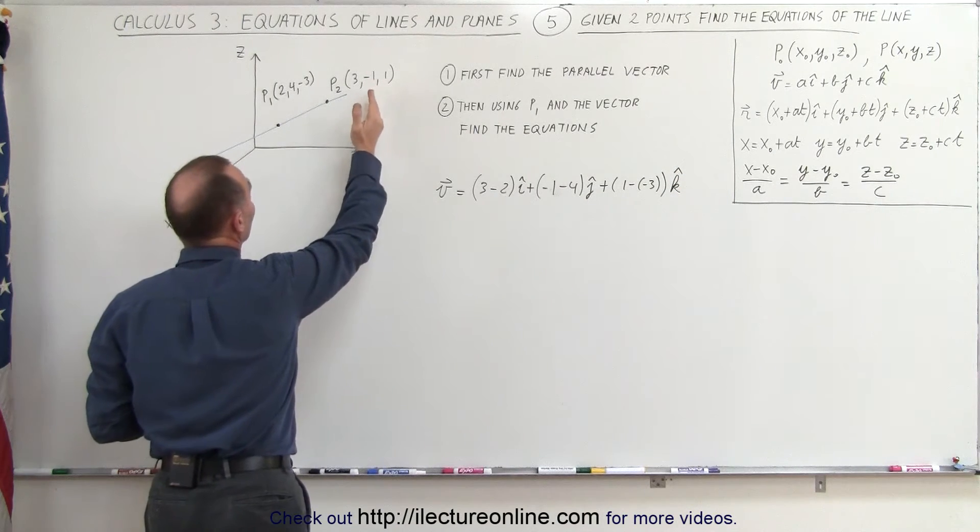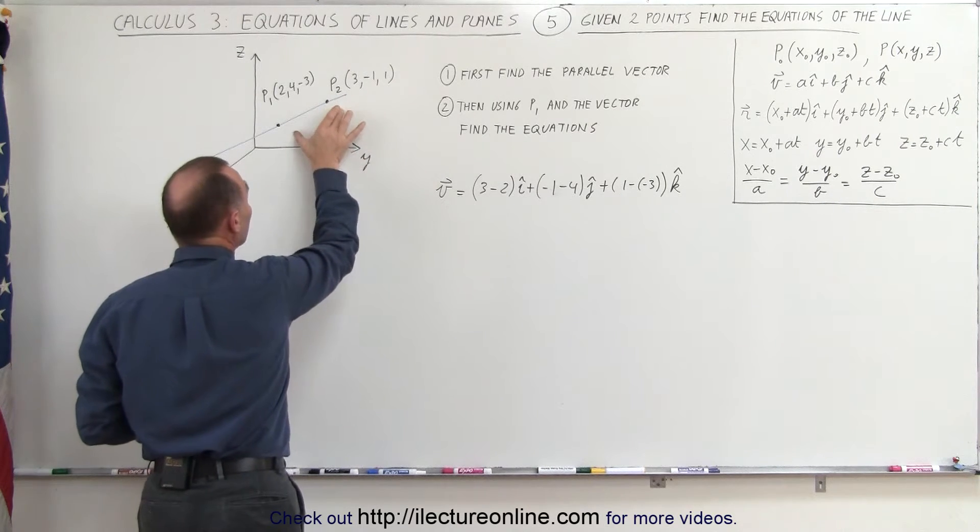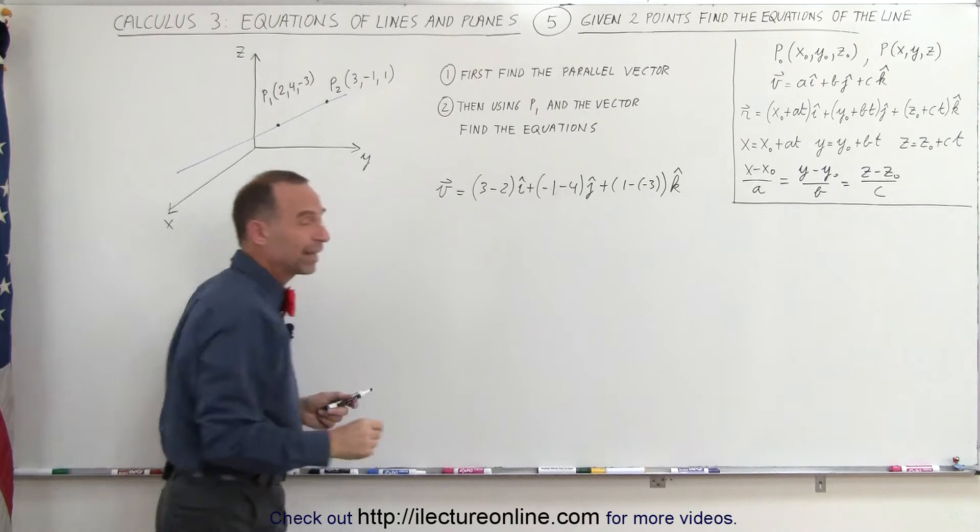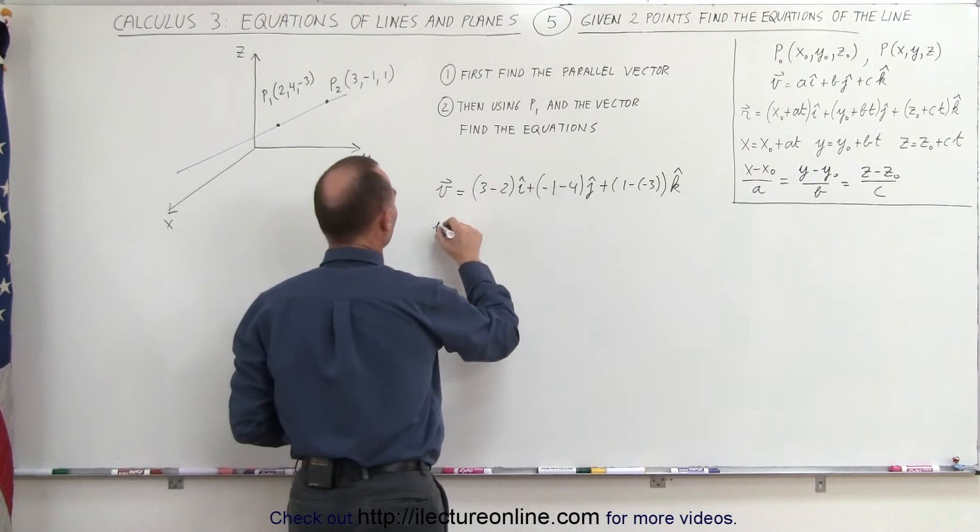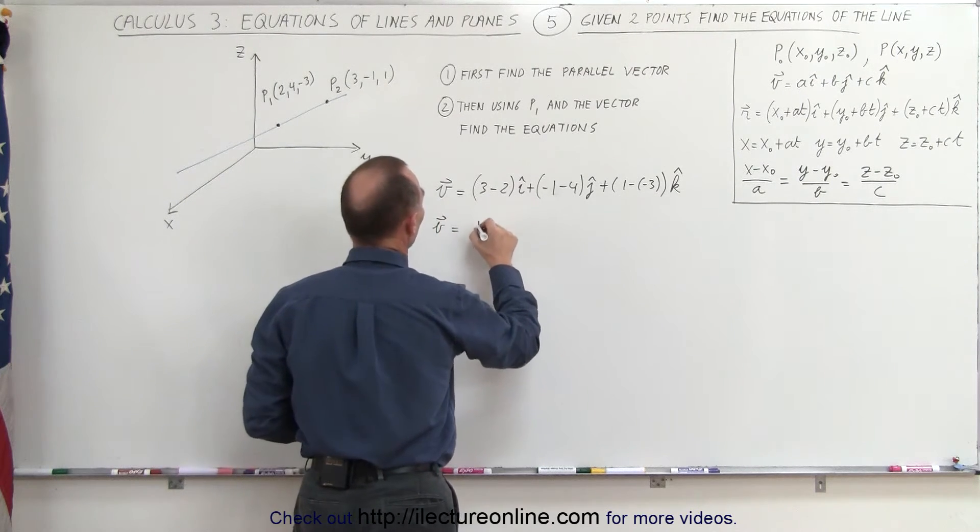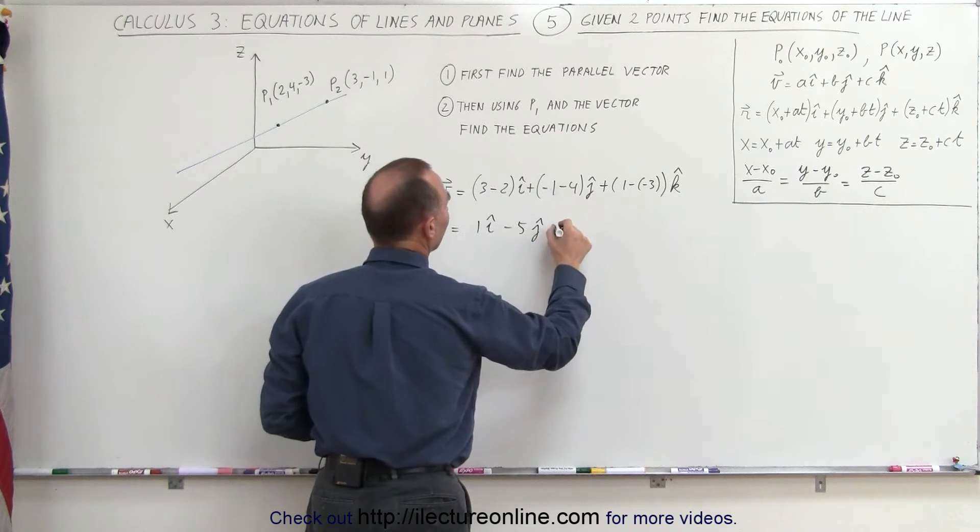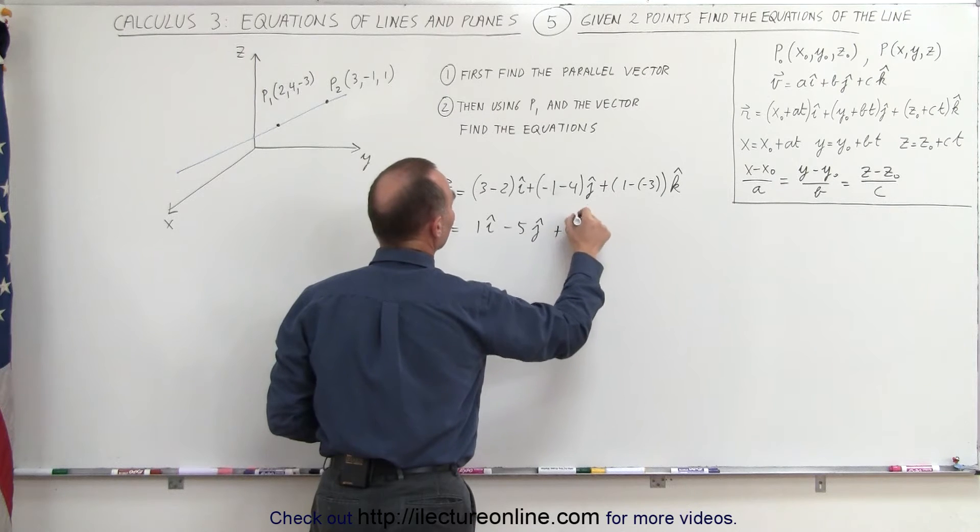What we've done here is we've simply taken the difference of the x, y, and z components of the two points to create a vector pointing from point 1 to point 2. That's how that's done. We can then say that our parallel vector v can now be written as 1 in the i direction, minus 5 in the j direction, and plus 4 in the k direction.